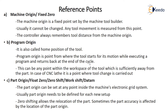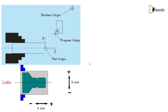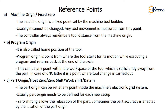Remember, at the end of the cycle the tool will go to program origin, not machine origin. This can be any point within the workspace of a tool which is sufficiently away from the part. After some part distance we have to give a program origin, and that is set by the instructor or programmer.